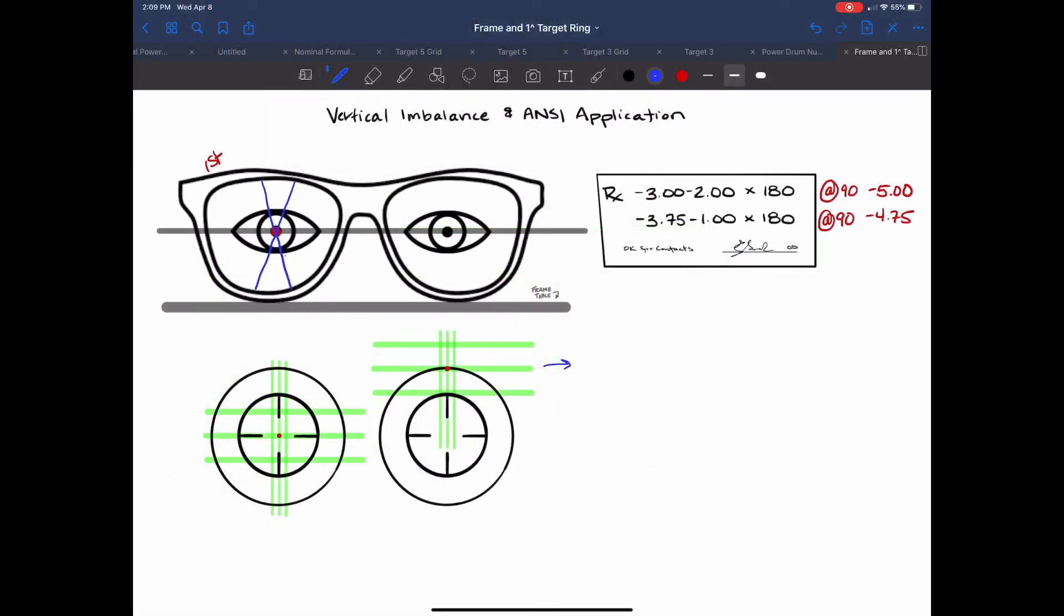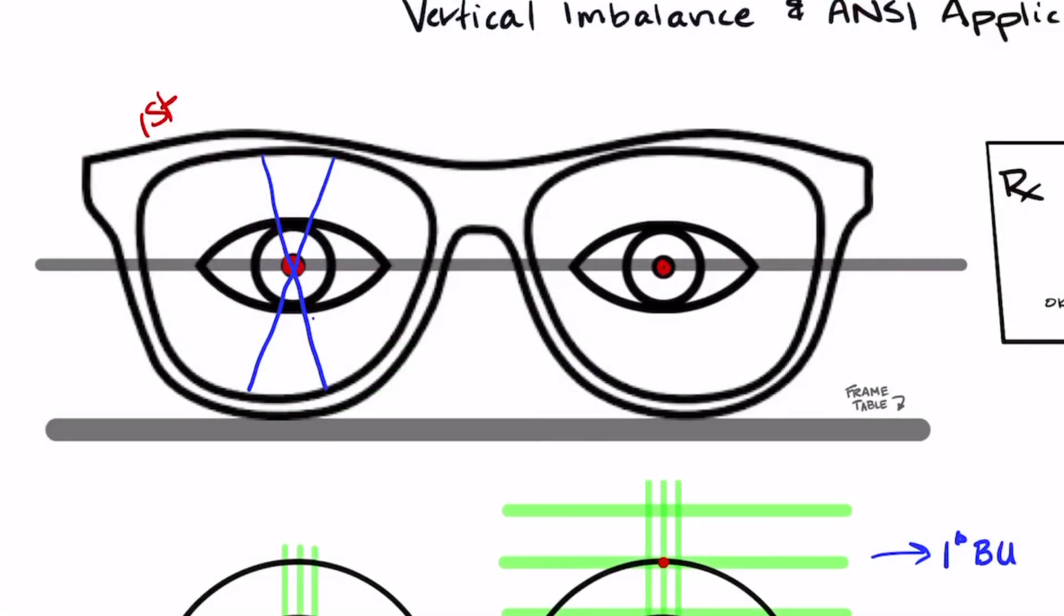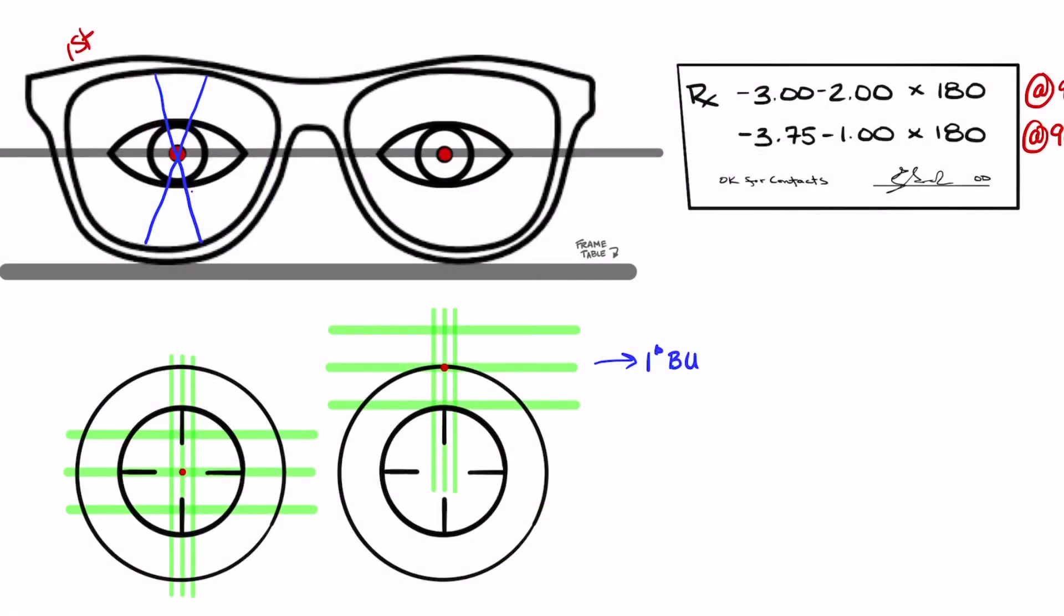So reading how much prism we have here we are at right at one diopter of base up prism and we're going to spot that location and that's going to be right on the same horizontal plane as the right eye. The patient is actually experiencing one diopter base up right there. They are not on the optical center.